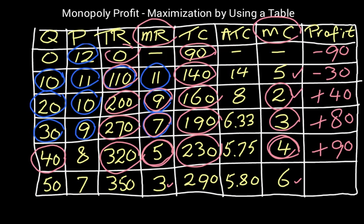And then at quantity 50, we have total revenue of 350 and a total cost of 290. So that's plus 60.